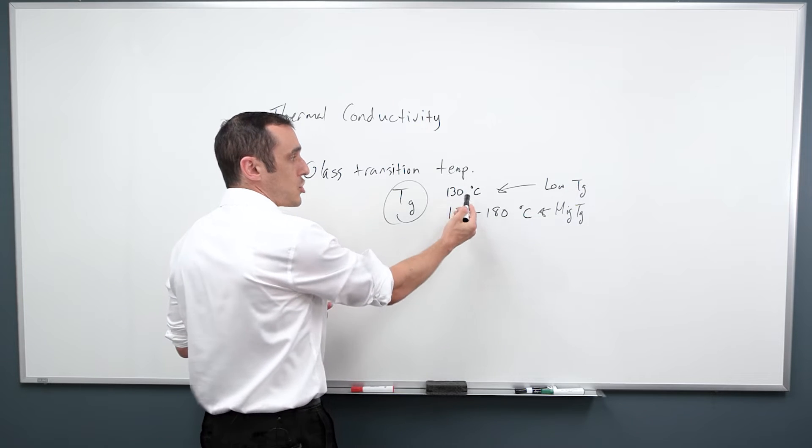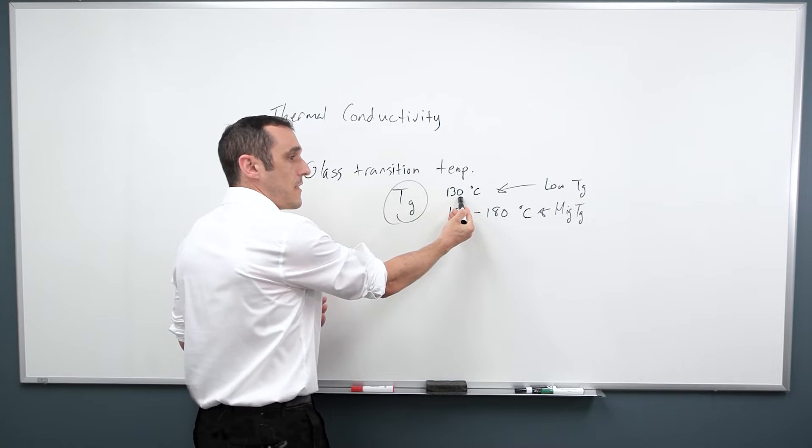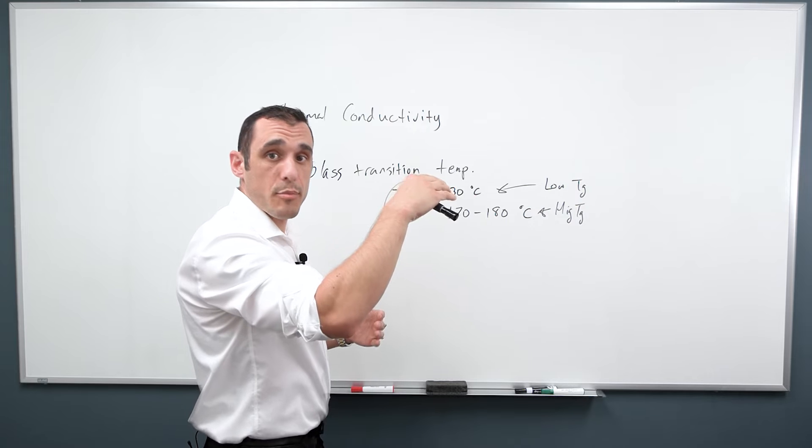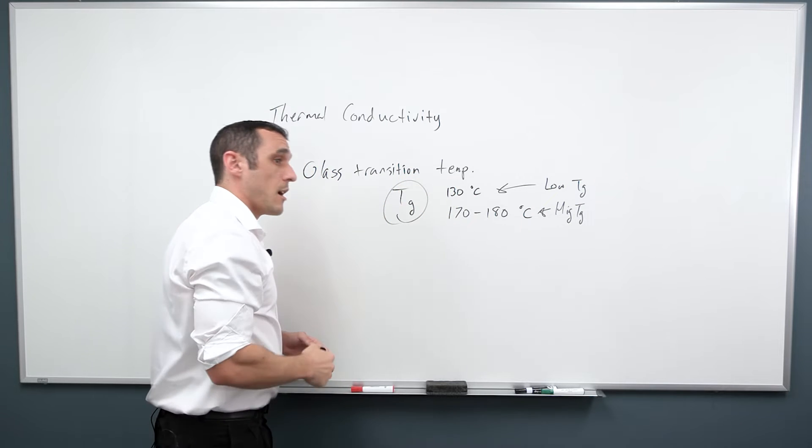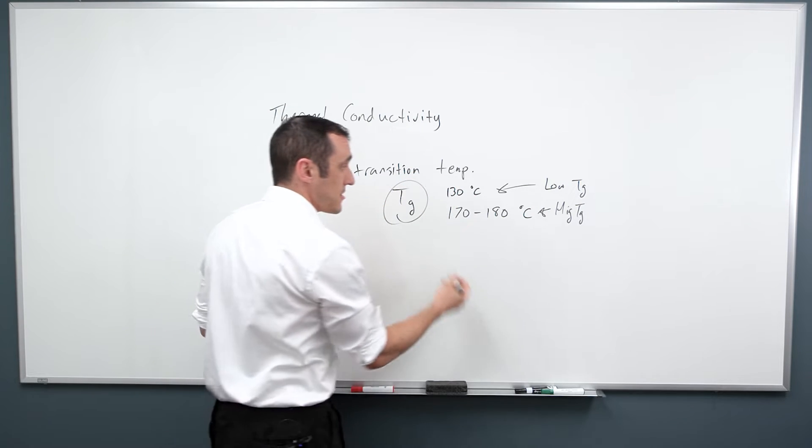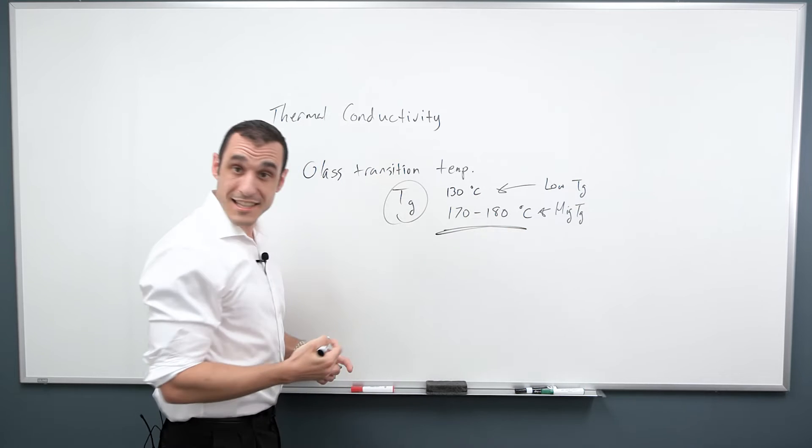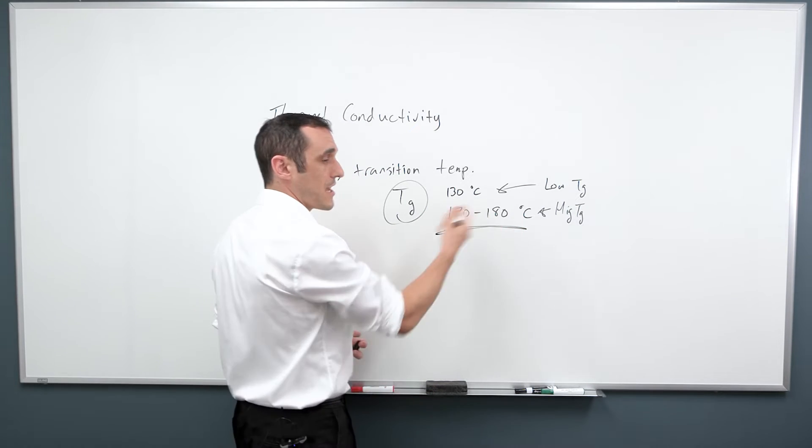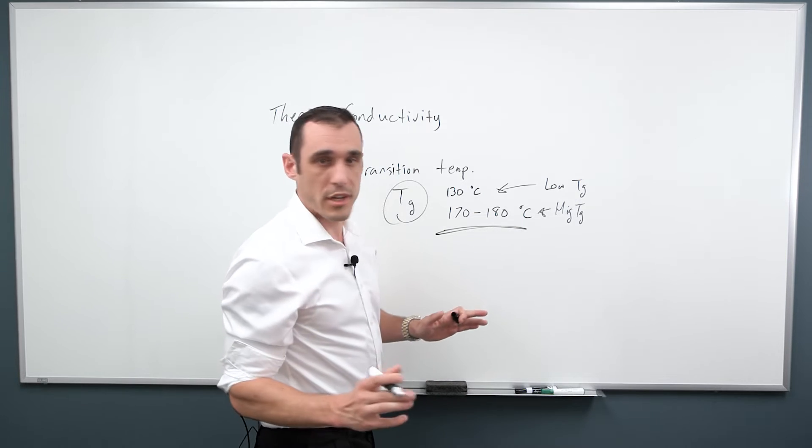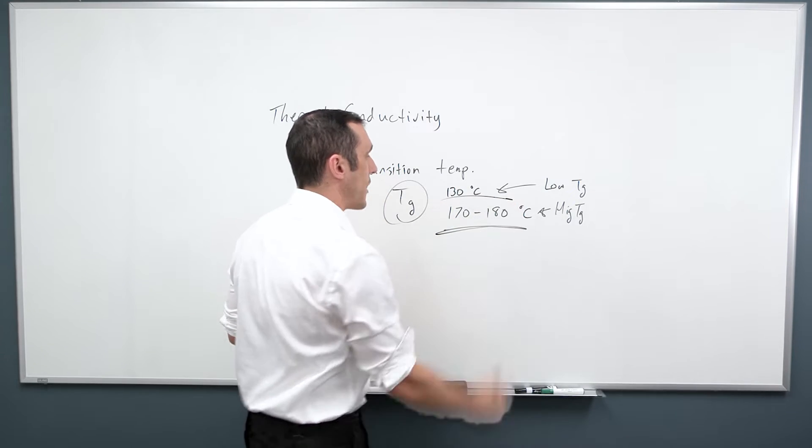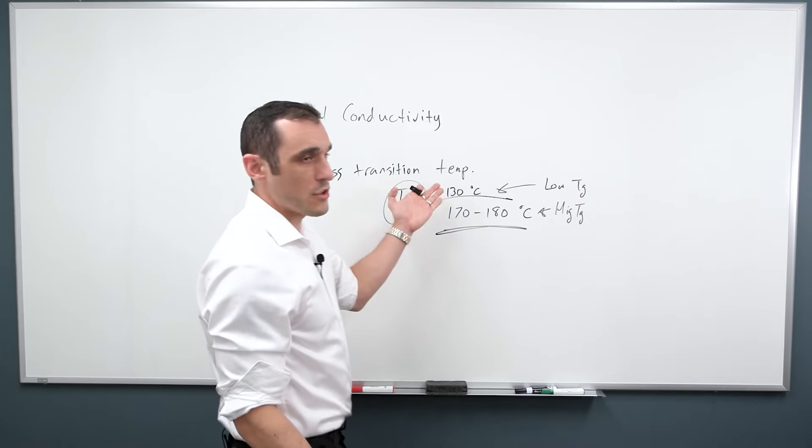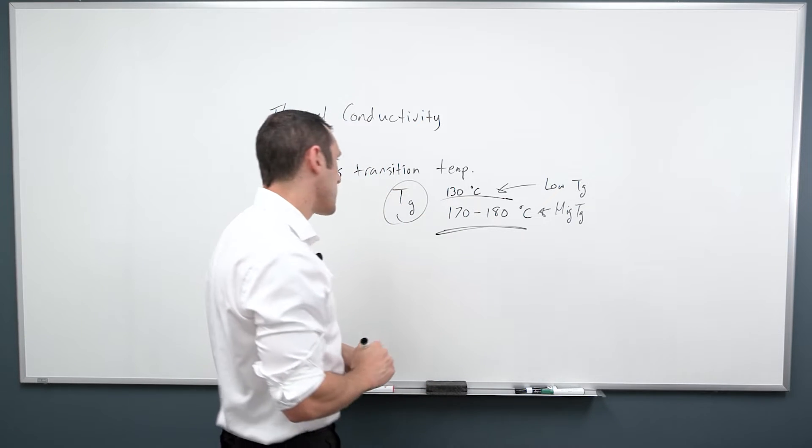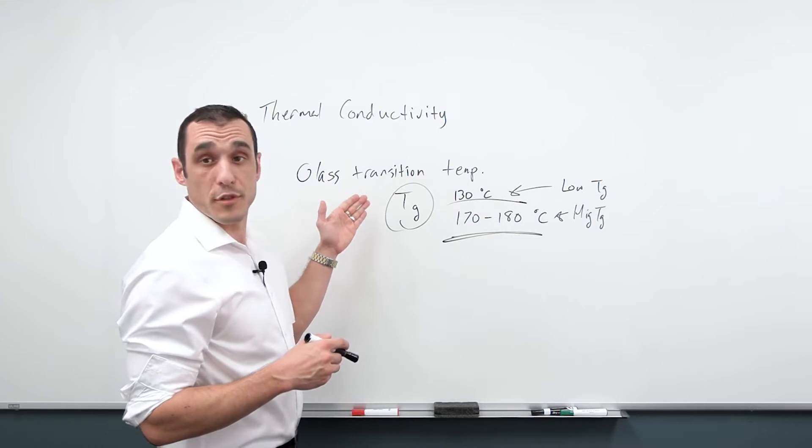So TG is very important. In general, you would like to choose a TG value that is above the projected operating temperature of your board. For high reliability applications, high TG is going to be your entry level. If it's just a one-off or a test board or you know it's always going to be running at room temperature, you're fine with low TG because you're generally going to be under 130 Celsius.